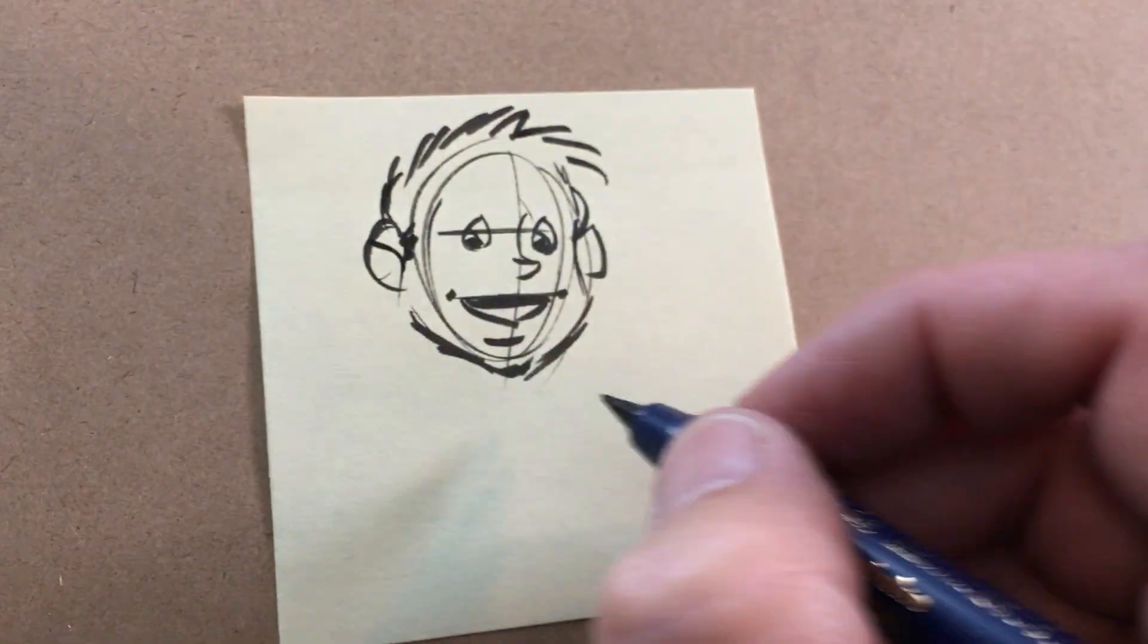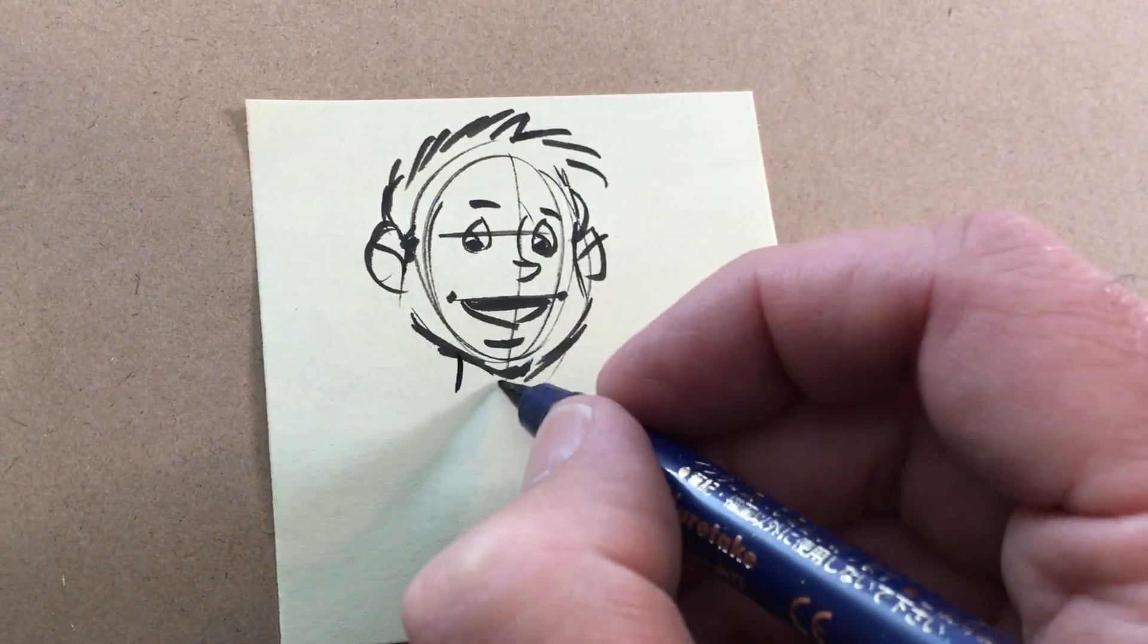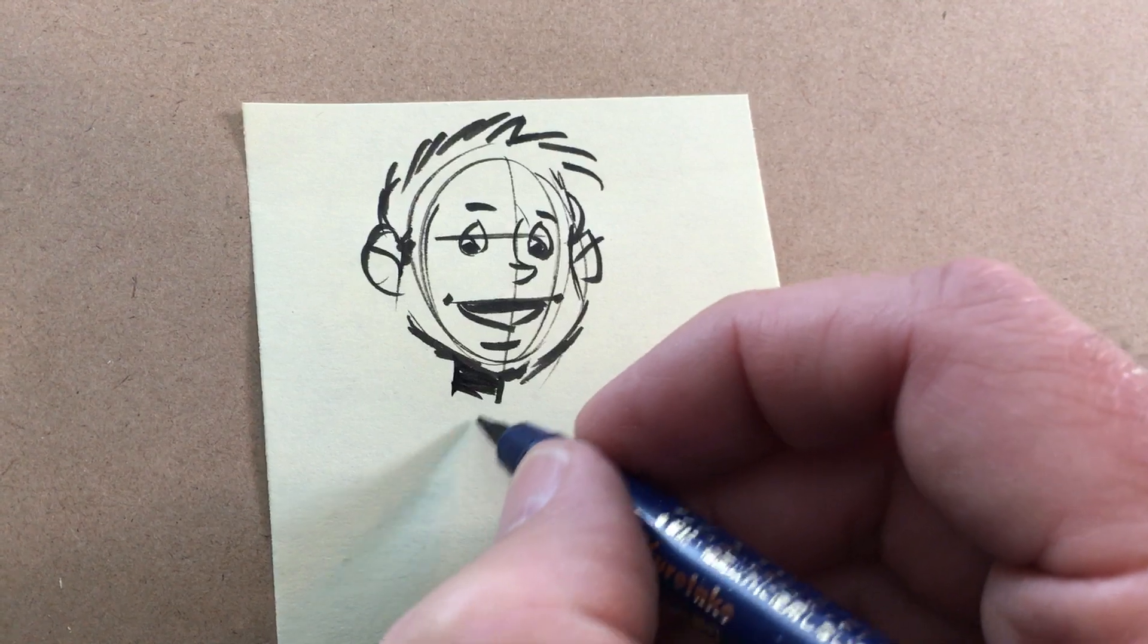And like I say, just a lot of fun to draw. When you're drawing kids, you can suggest their youth by giving them big ears and skinny necks.